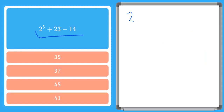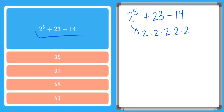We have two to the power of five, plus twenty-three, minus fourteen. There are no parentheses, so the first thing I do is solve for the exponent. Two to the power of five is two times two times two times two times two: two times two is four, four times two is eight, eight times two is sixteen, sixteen times two is thirty-two. So we have thirty-two plus twenty-three minus fourteen. There's no multiplication or division.